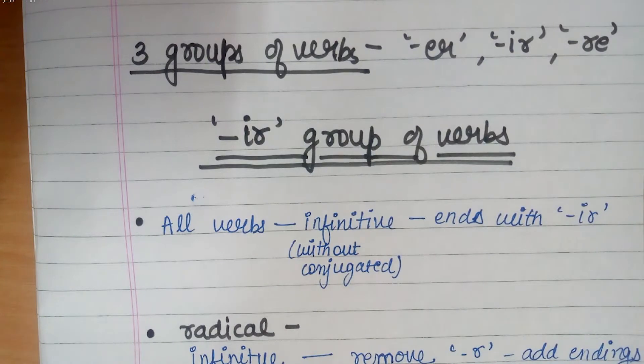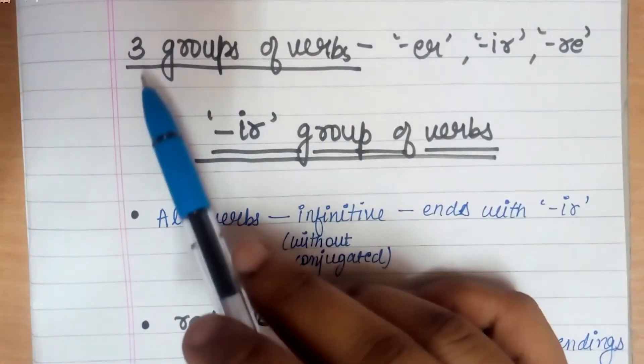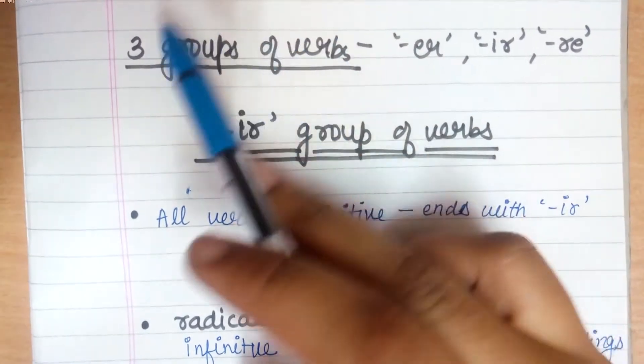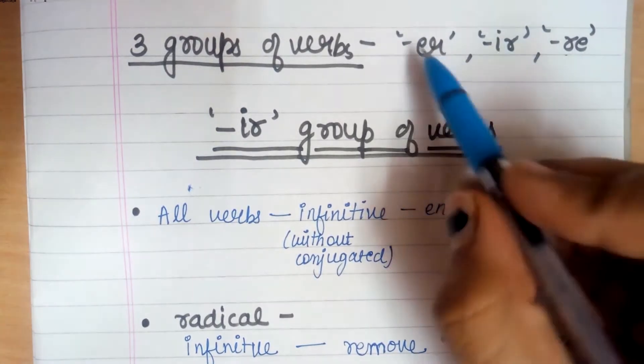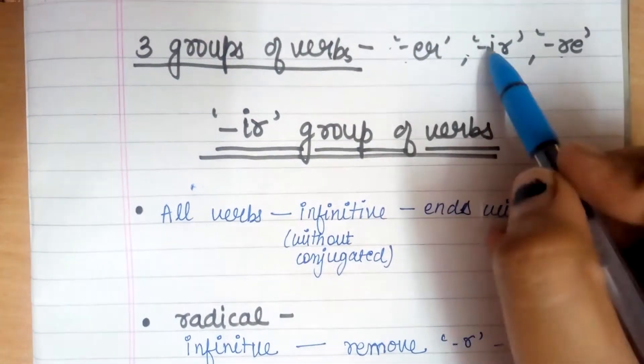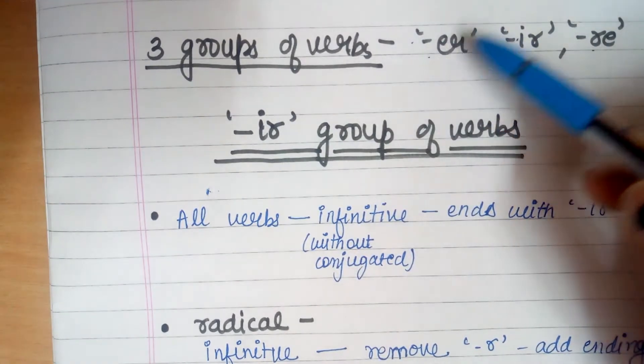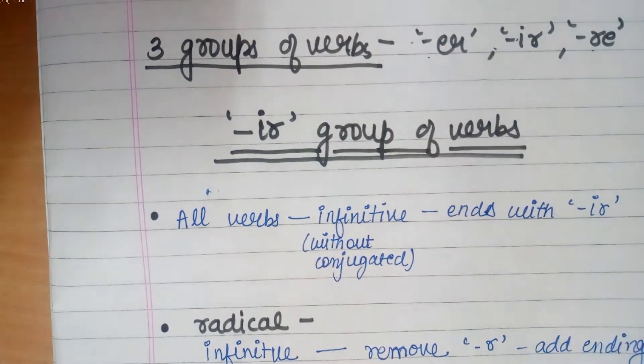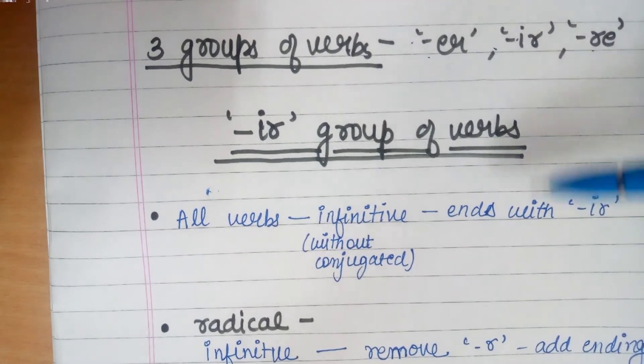Just like we studied the ER group of verbs, I told you that there are three types of verbs, three groups of verbs: the ER ending, the IR ending, and RE ending. These two are the regular verbs and this is the irregular verbs. In both, the endings are the same usually and all the verbs follow the same pattern, but RE is irregular, so this means that each verb is conjugated in different ways.